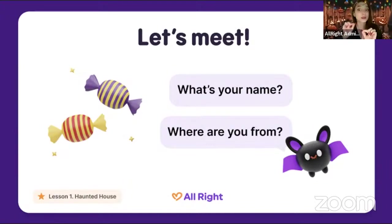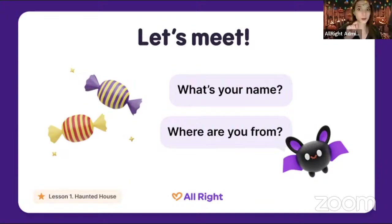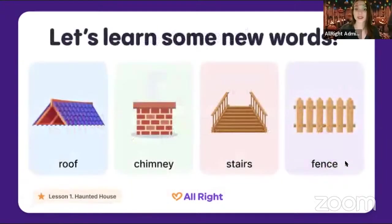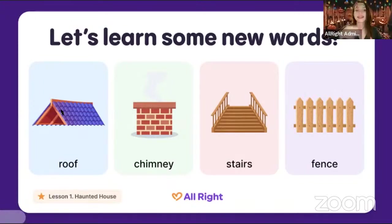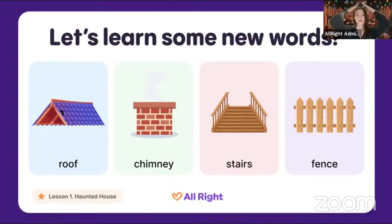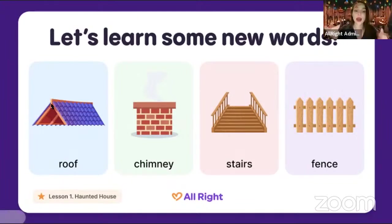I can talk slower if you don't understand me. Today we've got four new words — just repeat after me. The first one: join your hands together and say 'roof.' Repeat after me — roof! You can look up and see the roof on the houses. So the first word is 'roof.'